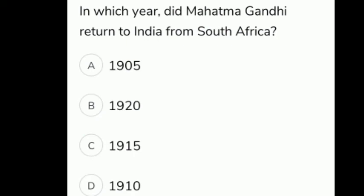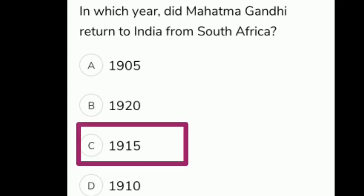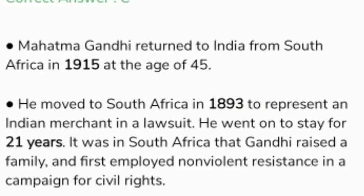In which year did Mahatma Gandhi return to India from South Africa? The correct answer is option C, 1915. Mahatma Gandhi returned to India from South Africa in 1915 at the age of 45. He had moved to South Africa in 1893 to represent an Indian merchant in a lawsuit and went on to stay for 21 years. It was in South Africa that Gandhi raised a family and first employed non-violent resistance in a campaign for civil rights.